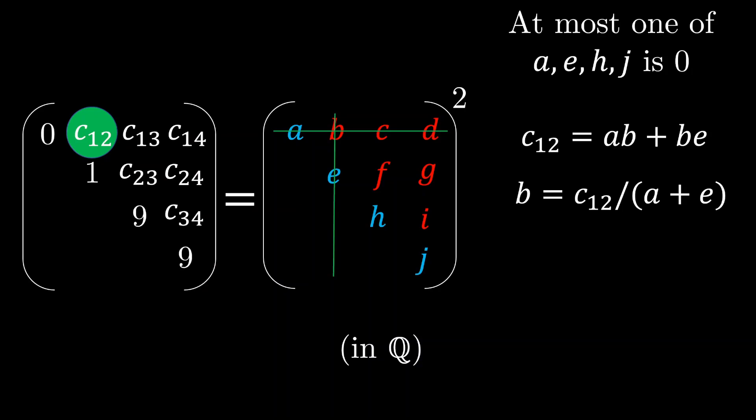So this is where the condition that at most one of a, e, h, j is zero comes in. Because you are going to need to divide by a plus e, which now we know is definitely strictly bigger than zero and division is allowed. So we write b as a rational function of rational numbers. So b can be solved as a rational number. And we see where this is going.